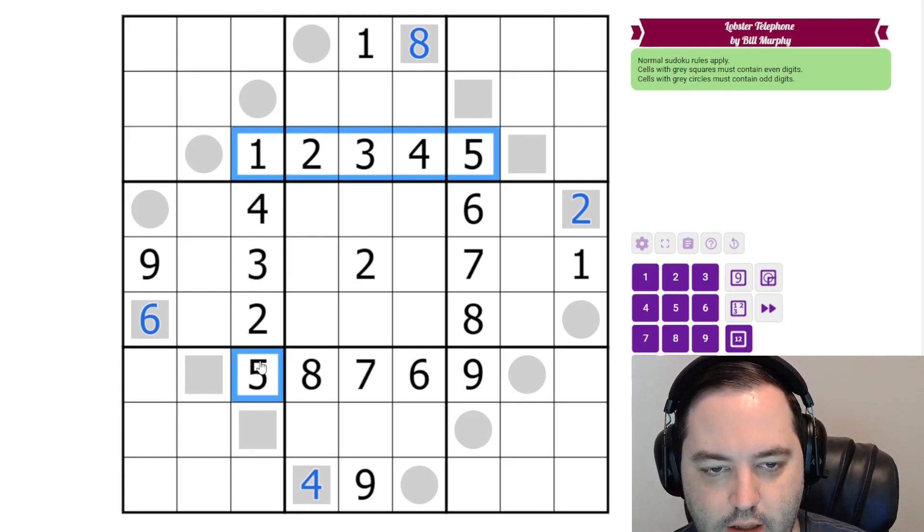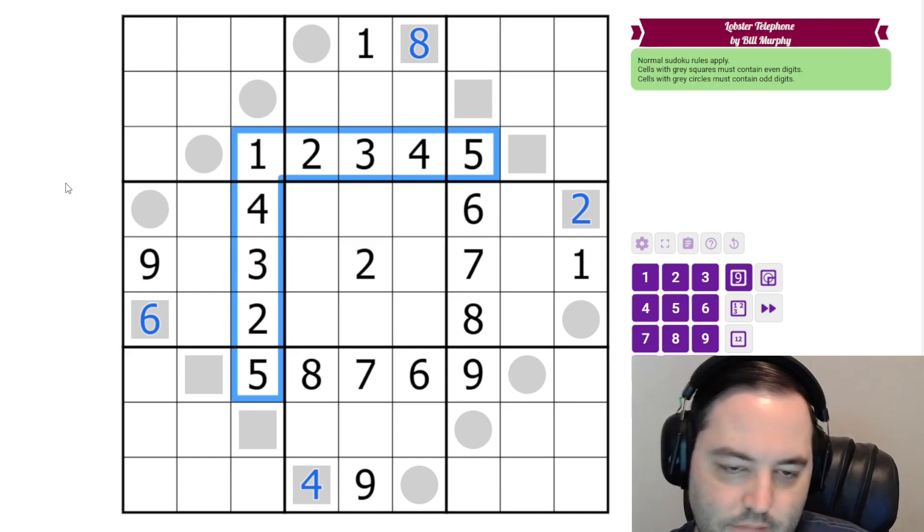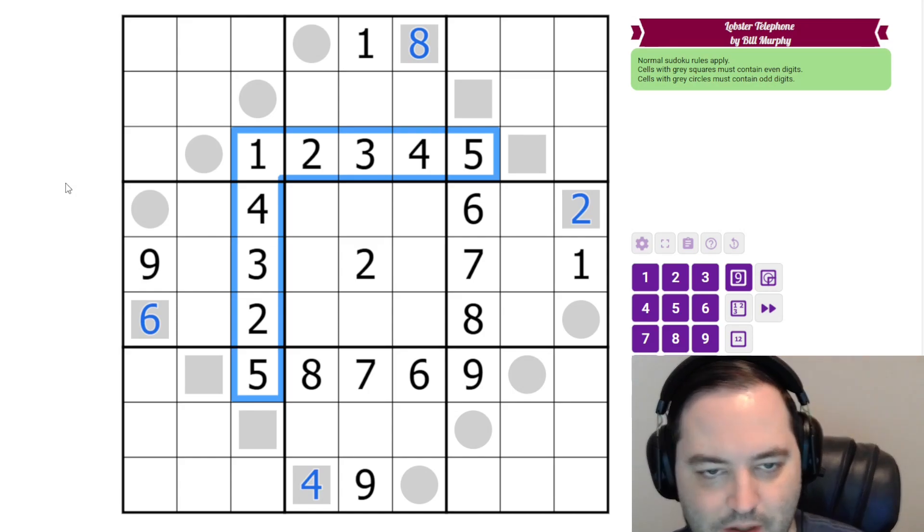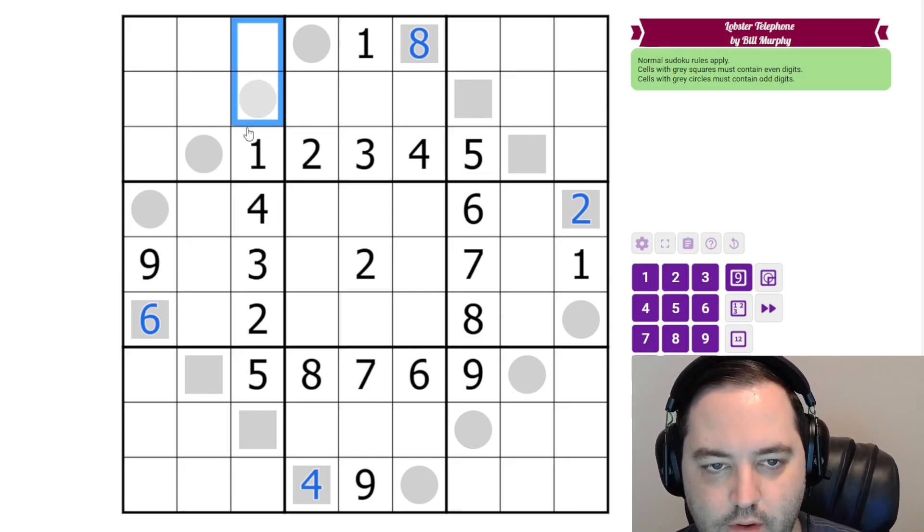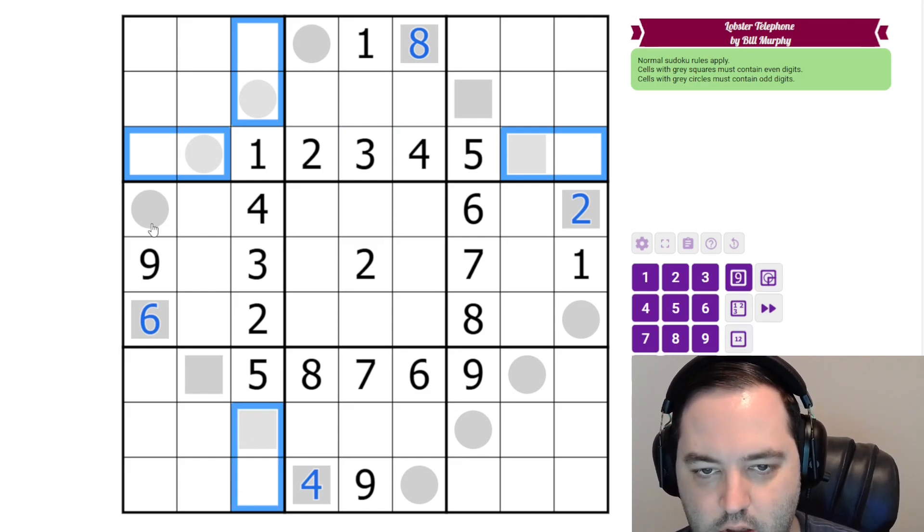All right, next we're going to look at this. It's a tiny bit advanced I guess, but hopefully not too bad. Both this row and this column contain one, two, three, four, five already. So we know that the cells in the remainder of the row and the column are high. They're from six, seven, eight, and nine.